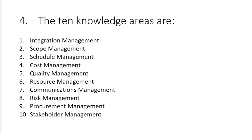Question four: the 10 knowledge areas. Integration is the unification, coordination, and combination of processes. Scope management is scoping out the project to effectively plan it. Schedule management is planning the timeline. Cost management is understanding and managing the budget. Quality management covers fitness for use, conformance to requirements, and customer satisfaction. Resource management is about acquiring, developing, managing, and controlling physical resources. Communications management is planning the five W's and the H — what, when, where, why, who, and how of communication.